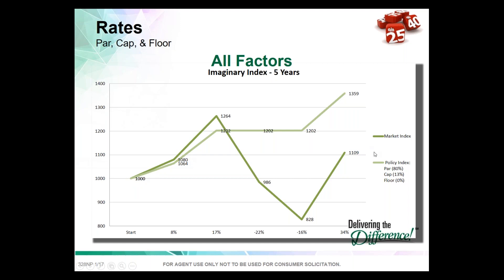With index designs — a floor rate to protect from the downside, and a cap and par to limit the upside — we got a five-year return in this example of 35.9%, ignoring policy charges. That's how index UL works. Sometimes it may do better than the actual underlying market, sometimes worse, but that's the idea.